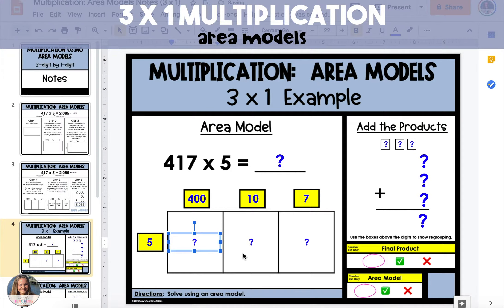Now we have to find the area of each individual section of our rectangle and to do this we're going to multiply our top number by our number on the side.